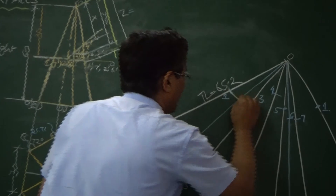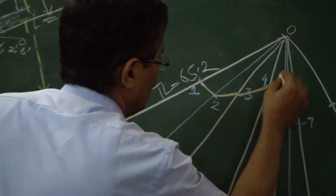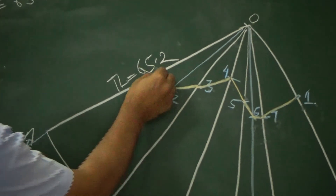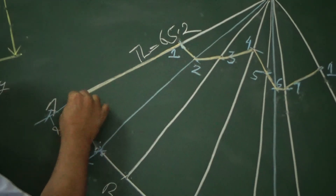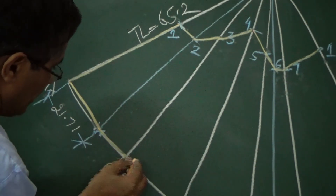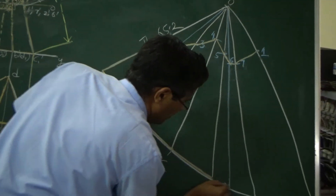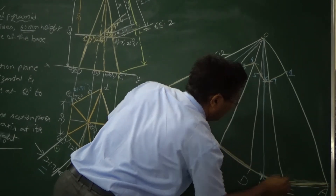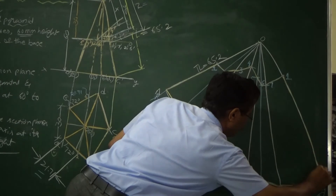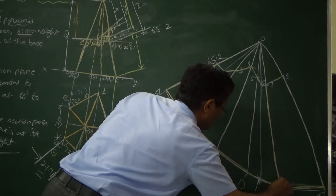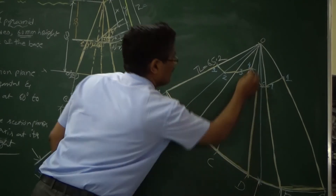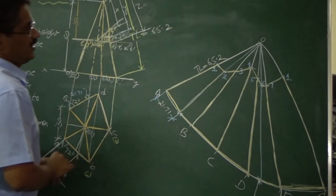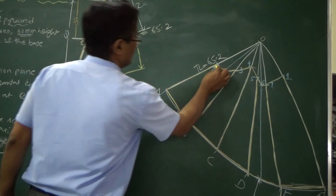Join points 1, 2, 3, 4, 5, 6, and 7 using straight lines with a scale. The retaining portion below the section must be drawn with continuous thick lines since it is a pyramid. Darken this retaining portion to complete the development drawing.